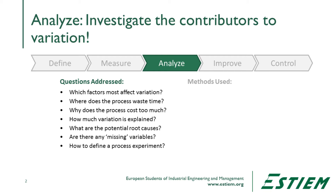The Analyze phase is going to determine which of these process factors contribute the most variation to the outcome of this core problem. It begins by making this performance baseline from the Measure phase, and it's going to end with a working hypothesis about causation and the root cause. A number of questions we're going to ask: Which factors affect variation the most? Where does the process waste time? Where does it cost too much? How much variation can we actually explain by these process details? What are the potential root causes to consider in the Improve phase? Are there any missing variables — more X's — because we don't have a full description of the process? And finally, how do we describe a potential process experiment that could demonstrate causation and allow us to understand what we need to do to actually solve the problem?